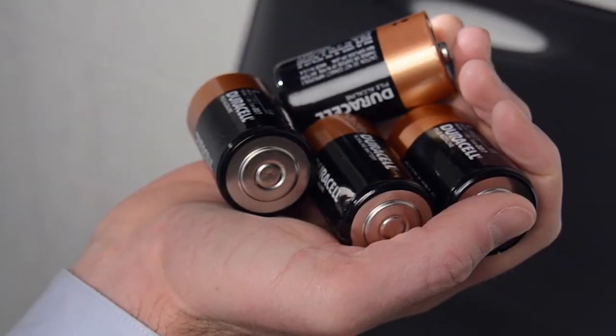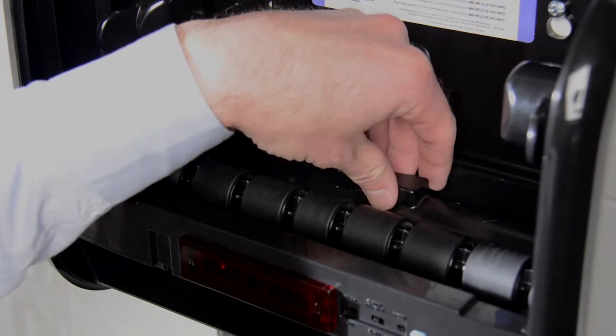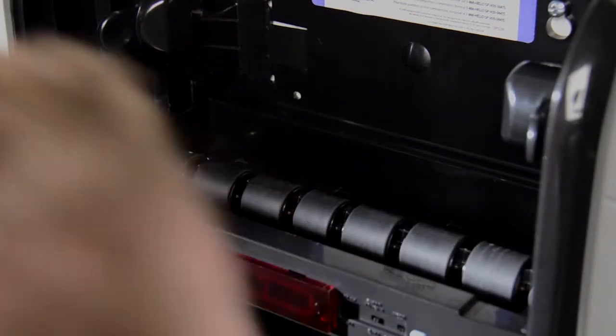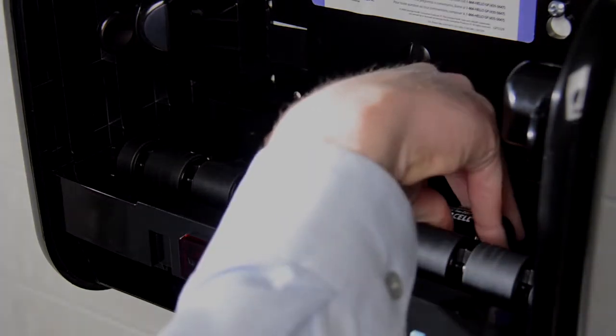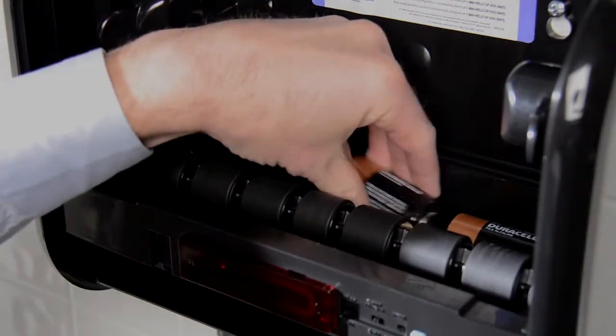To load the batteries, locate the compartment at the bottom of the dispenser and unlock and remove the cover by sliding it in the direction of the arrows. Then, install four D-Cell Alkaline batteries in the compartment, making sure to place them according to the battery diagrams.